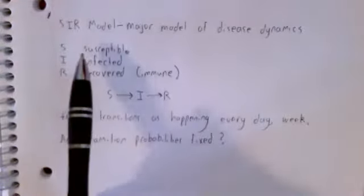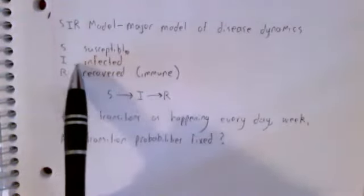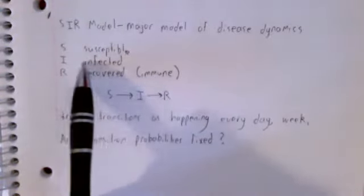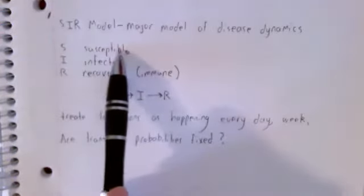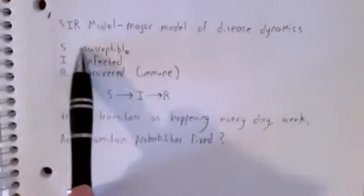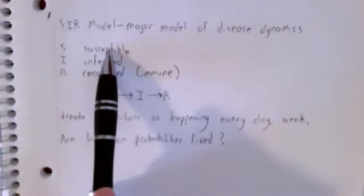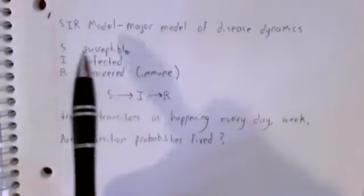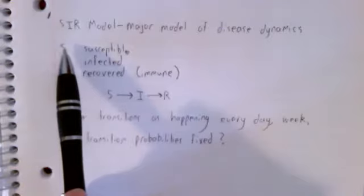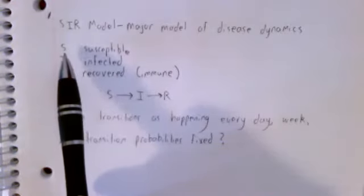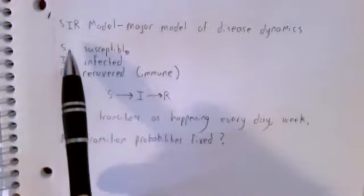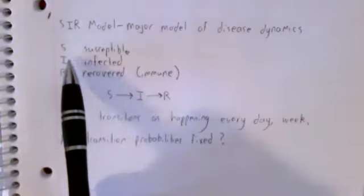So imagine an infectious disease. It's being spread by personal contact. And say initially, there are only a few infected people. Then susceptible people are unlikely to meet infected people. And since we can only go from S to I when that happens, the probability of going from S to I is low.